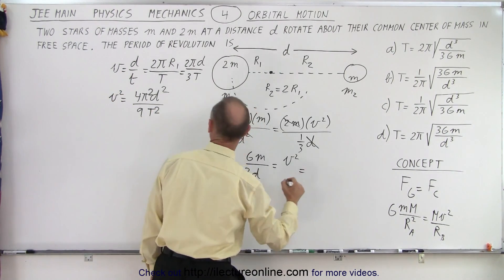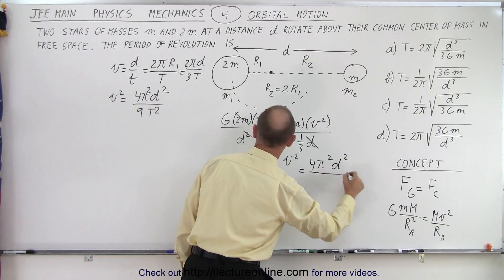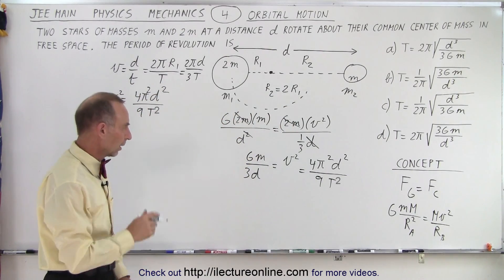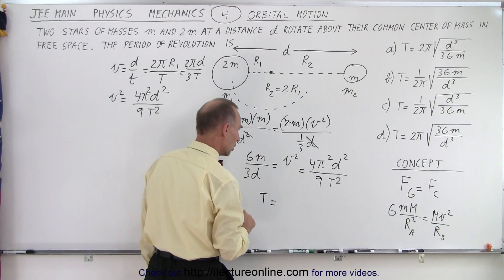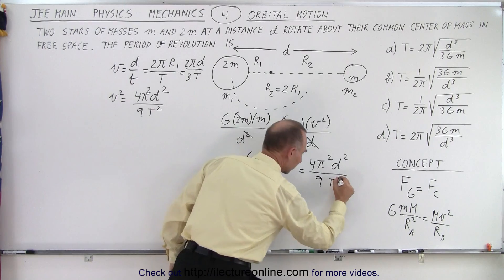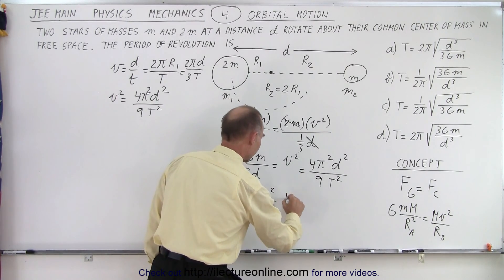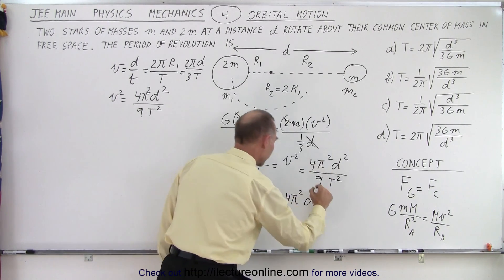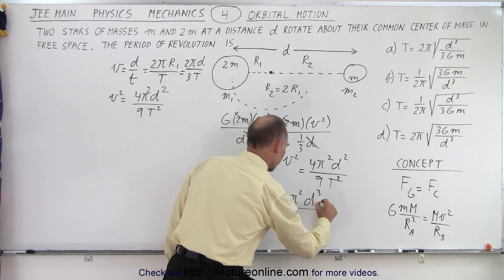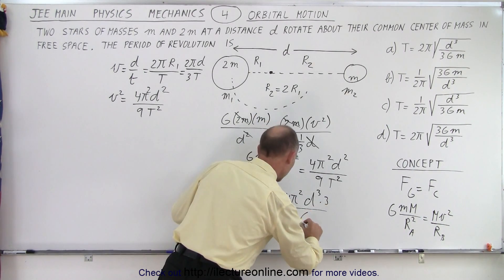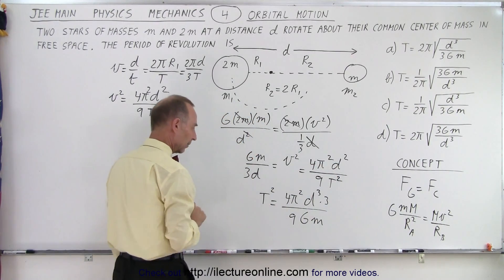Since we have v², we square both sides: v² equals 4π²d² over 9T². Substituting that in, we get 4π²d² divided by 9T² on the right side. Solving for T², the T goes to the numerator. Careful about the algebra — T must also be squared. So T² equals 4π²d³ divided by 3Gm, since the d from the left side makes d³, and the three in the numerator over nine in the denominator simplifies.